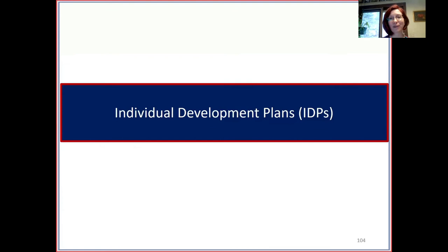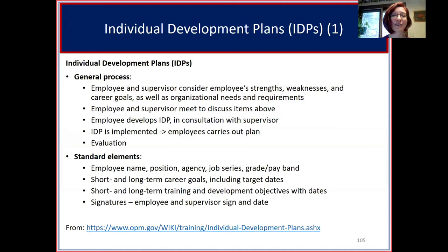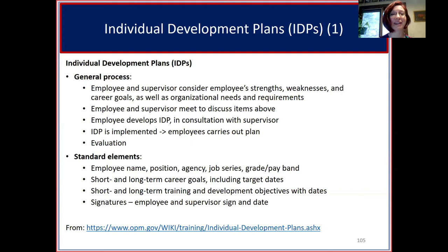Now that you know your needs and direction, how do you organize it all? One way is an Individual Development Plan (IDP). The general process: the employee and supervisor consider the employee's strengths, weaknesses, and goals, as well as organizational needs and requirements. They meet, discuss, and develop the IDP together. The employee carries out the plan with supervisor support. Common elements include name, position, agency, job series, grade, short and long-term career goals with target dates, and short and long-term training and development objectives.